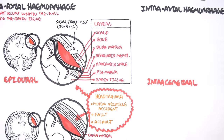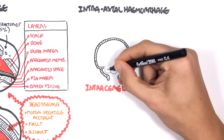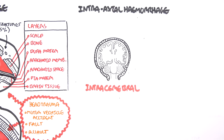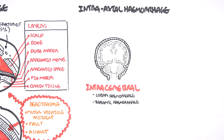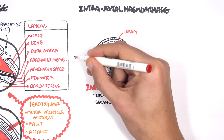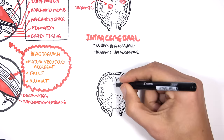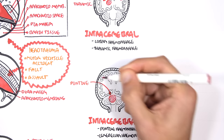Those were the three types of extra-axial hemorrhage: epidural, subdural, and subarachnoid. Now let's look at intra-axial hemorrhage, which is hemorrhage that occurs within the brain tissue. An example is intracerebral hemorrhage, with sub-examples including lobar hemorrhage in specific lobes of the brain, thalamic hemorrhage within the thalamus, pontine hemorrhage in the pons, and cerebellar hemorrhage in the cerebellum.